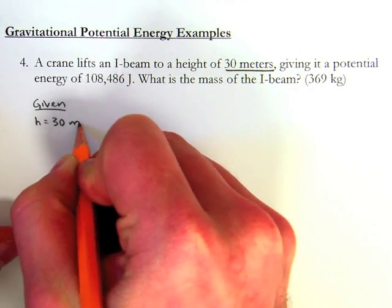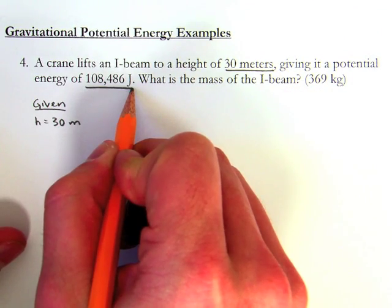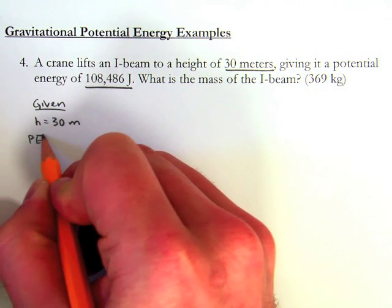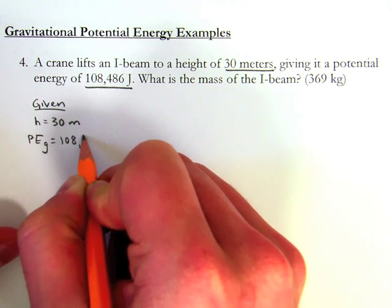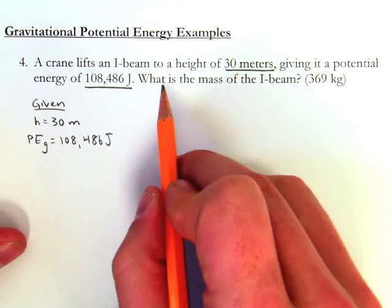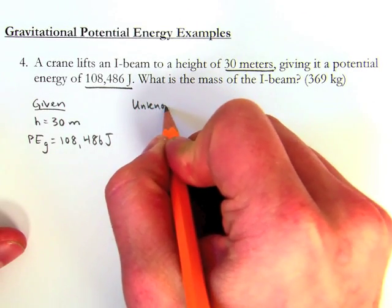Giving it a potential energy of 108,486 joules. So my potential energy due to gravity is 108,486 joules. What's the mass of the I-beam? My unknown is going to be mass.